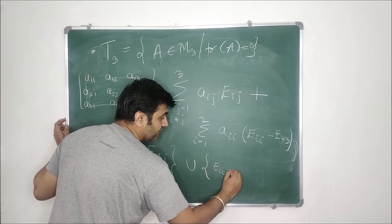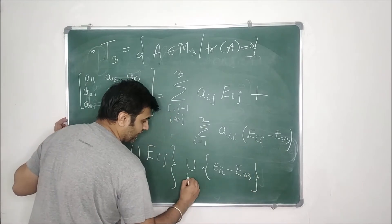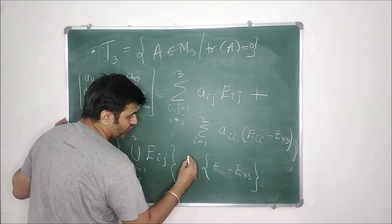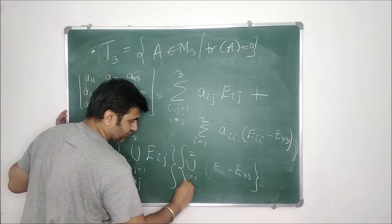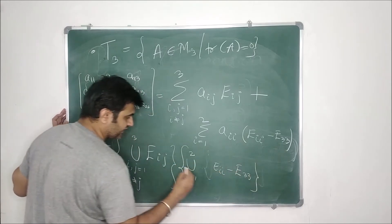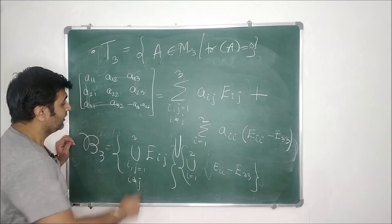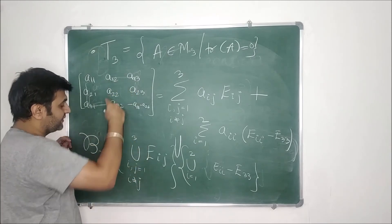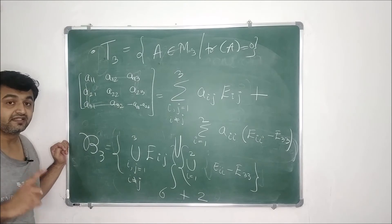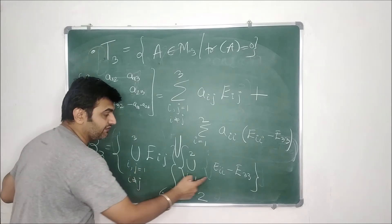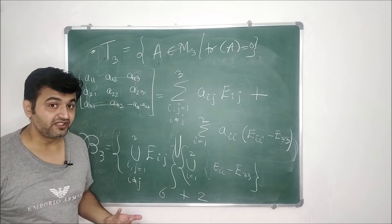So the basis B₃ is: {Eᵢⱼ : i≠j, 1≤i,j≤3} ∪ {Eᵢᵢ − E₃₃ : i=1,2}. That gives 6 + 2 = 8 elements, so the dimension of T₃ is 8. And now you can see it's easy to generalize.